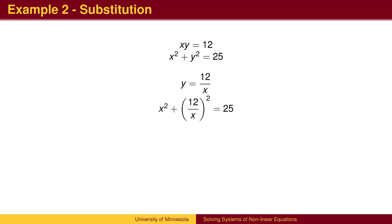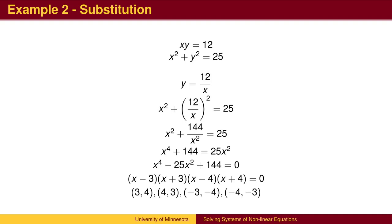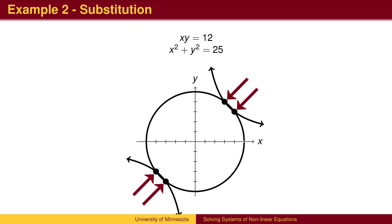We can then plug this value for y into the second equation. Simplify. Multiplying both sides by x squared will eliminate fractions and make the equations easier to work with. We get one side equal to zero. Factor. Then find the values first for x, then for y. We have four points of intersection.